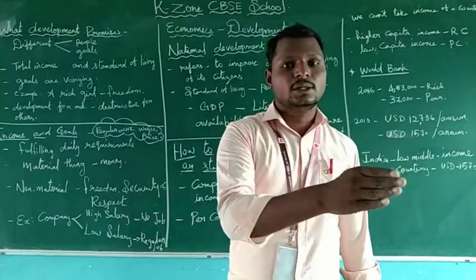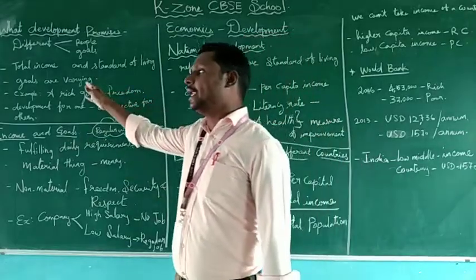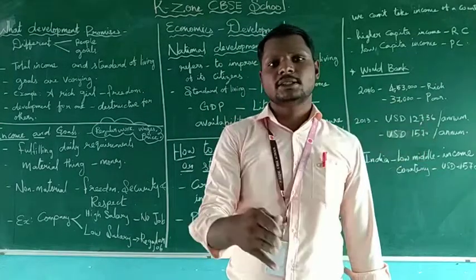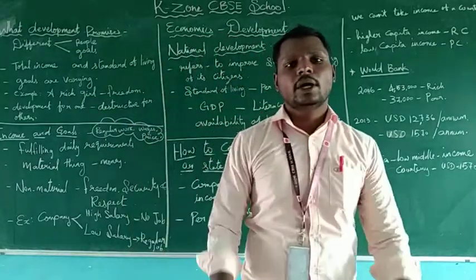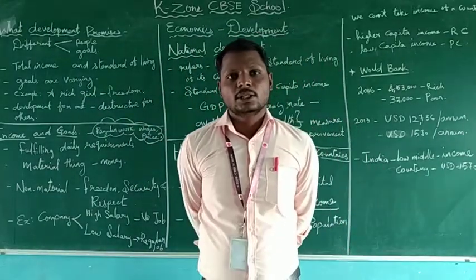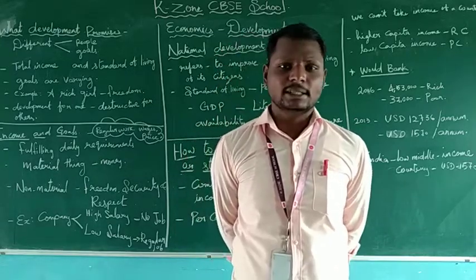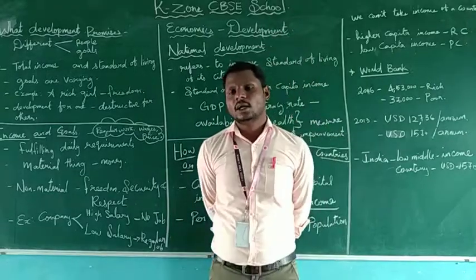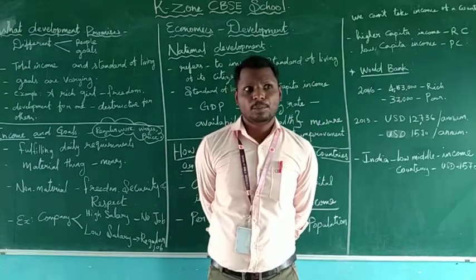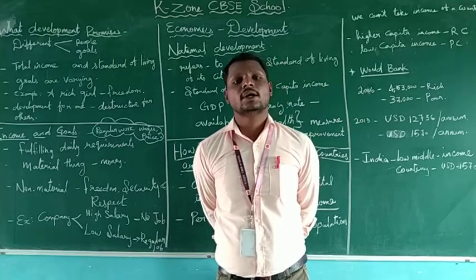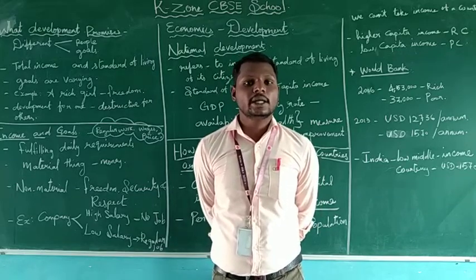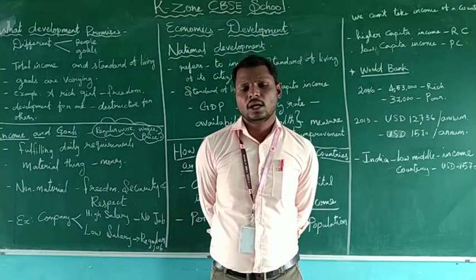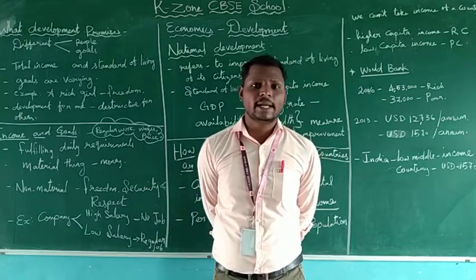Different people have different goals — goals are varied from one person to another. For example, take a rich girl: in her life she has more freedom, as in her urban family, and she can go to study abroad. But consider the poor girl — is a poor girl able to get the same freedom which the rich girl got in her family? No. A rich girl can go abroad, but the poor girl cannot. So that is the difference. In this lesson we are going to see these kinds of inequalities in economics.